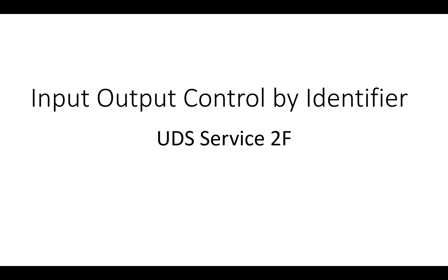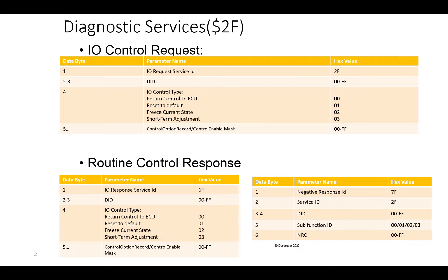Examples could be heater control output, inlet door position, RPM, pedal position, or any actuator outputs. Let's see the request and response format. For the request, firstly the service ID is 0x2F, followed by the DID.